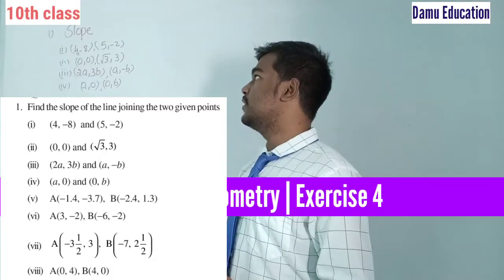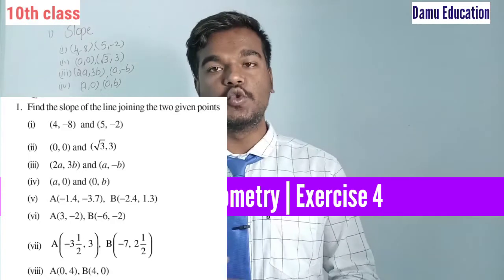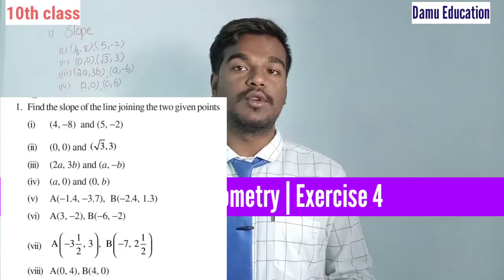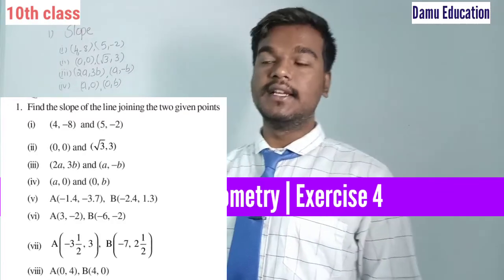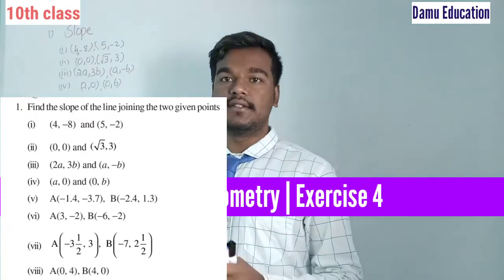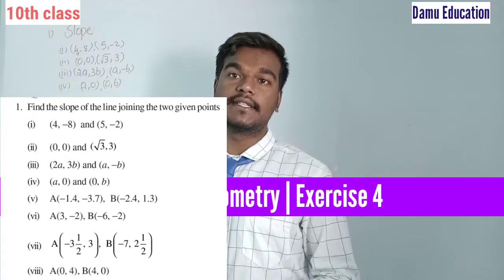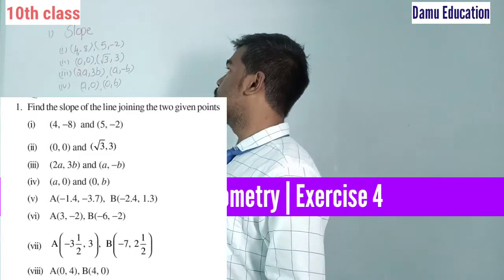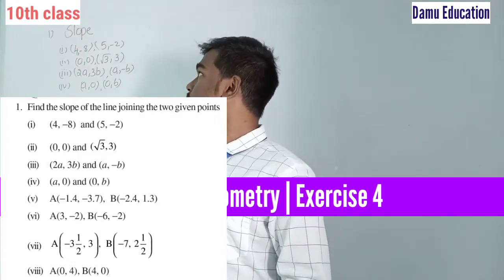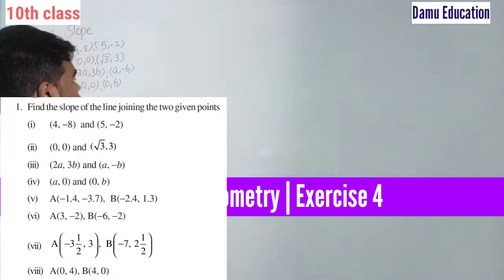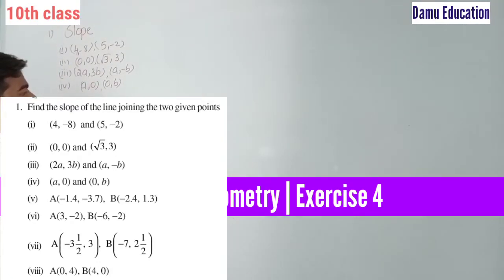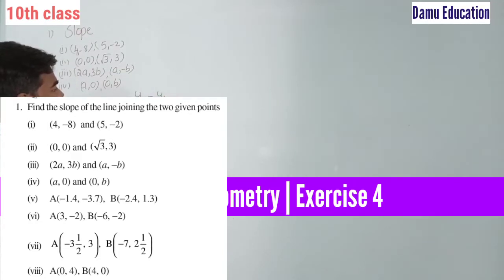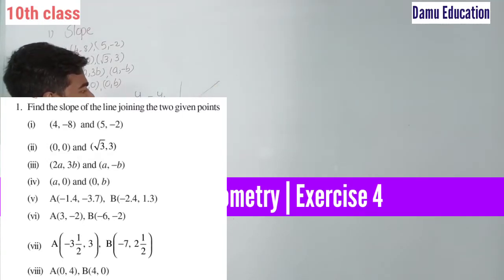The line joining two coordinates — whatever line segment is joined by two coordinates — we have to find the slope of that line. Slope is nothing but the change in y divided by the change in x. The slope will be constant at any point; if you extend that straight line, the slope remains the same. The slope formula is: slope = (y2 - y1) / (x2 - x1).